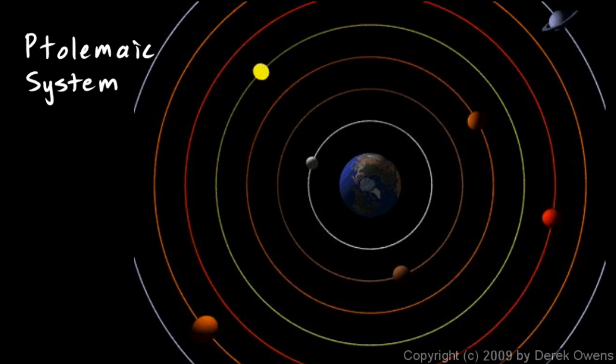Those smaller orbits were called epicycles. It was necessary to add those into the Ptolemaic system to make the motions of the planets match the motions in the night sky. The Ptolemaic system grew very complicated over time, as people kept adding details to make this model precisely match the motions of the planets in the sky.